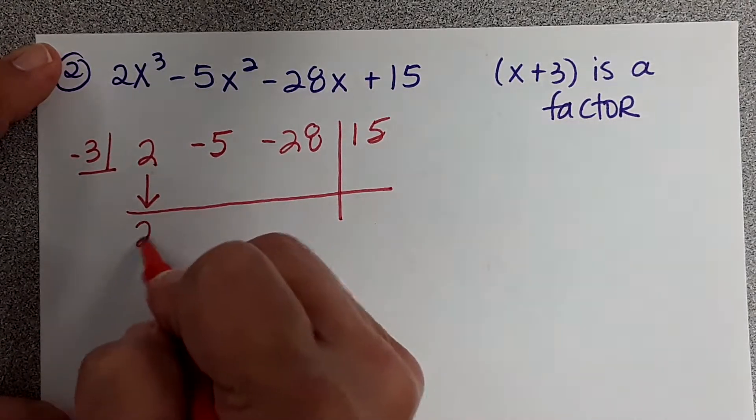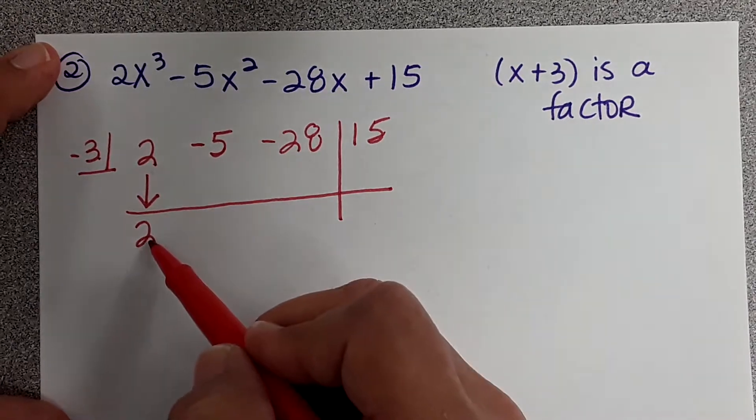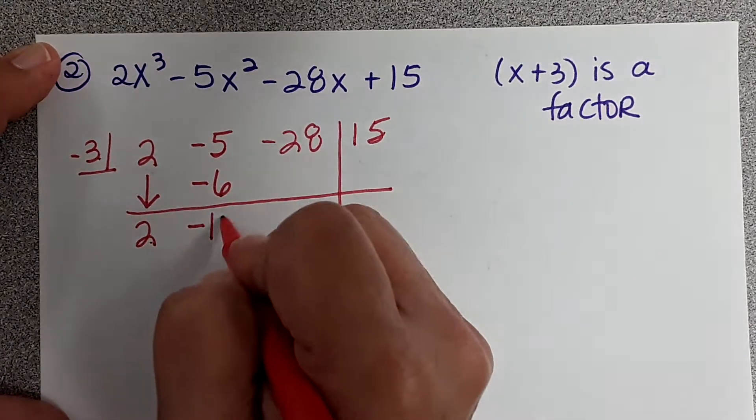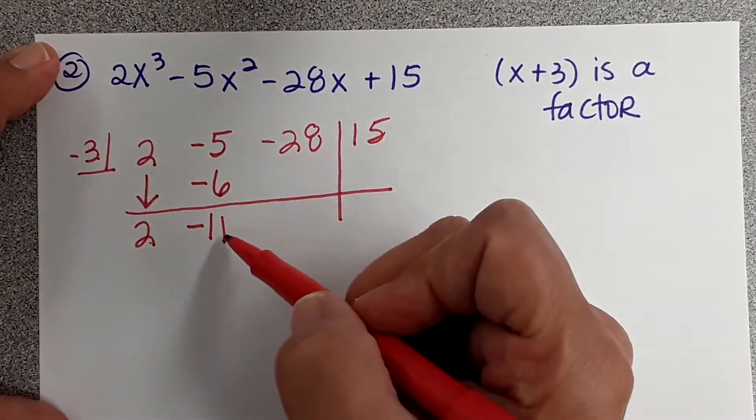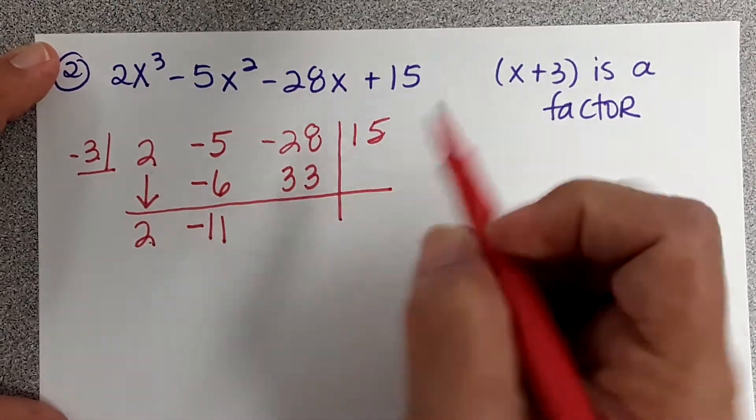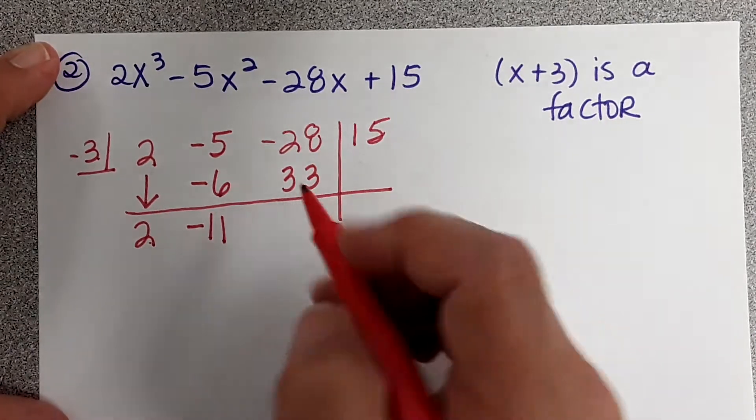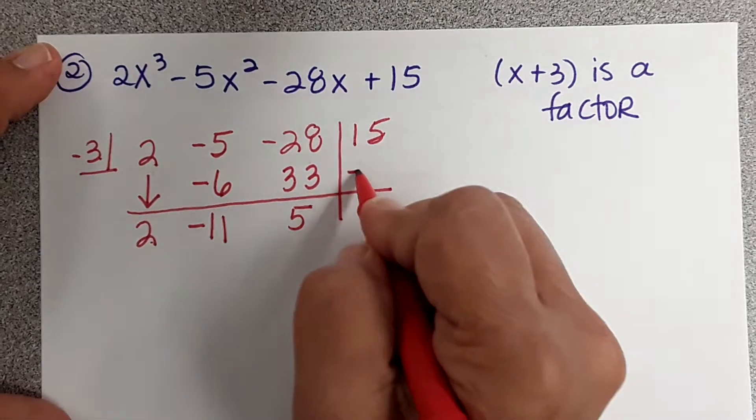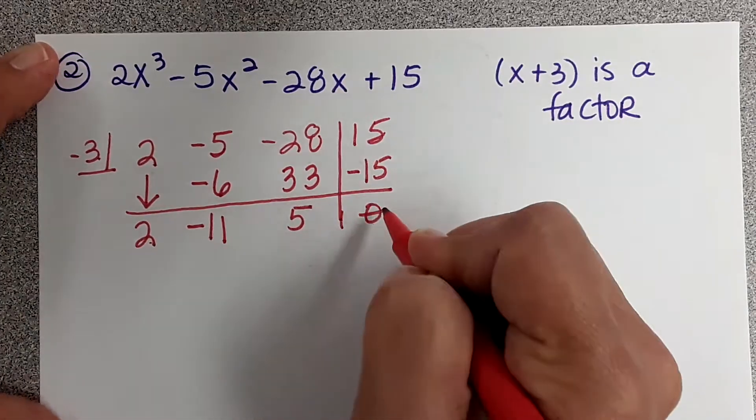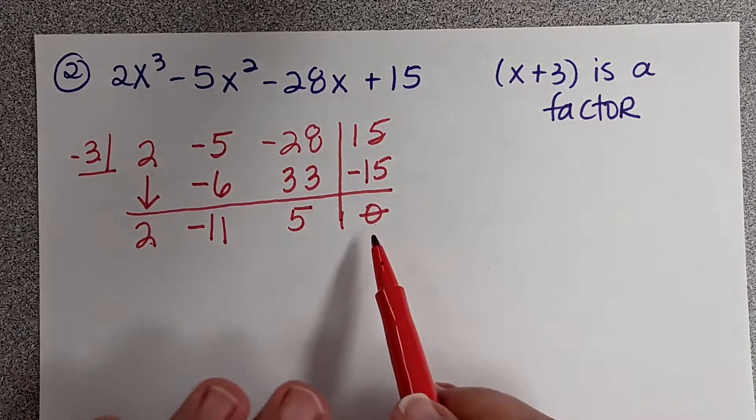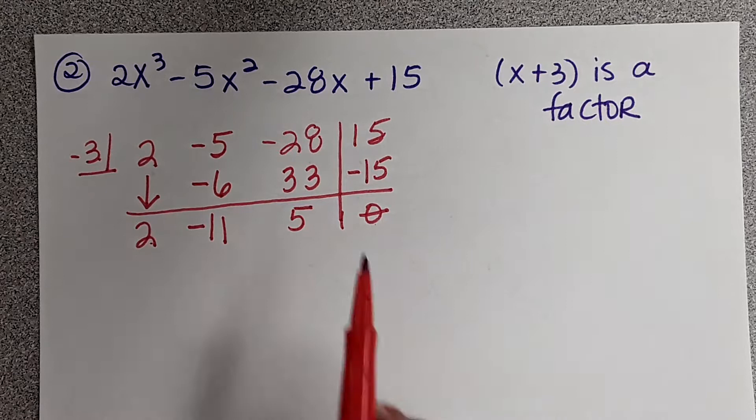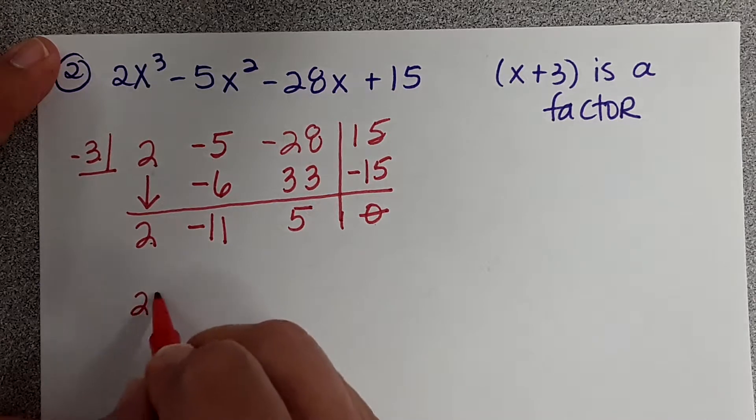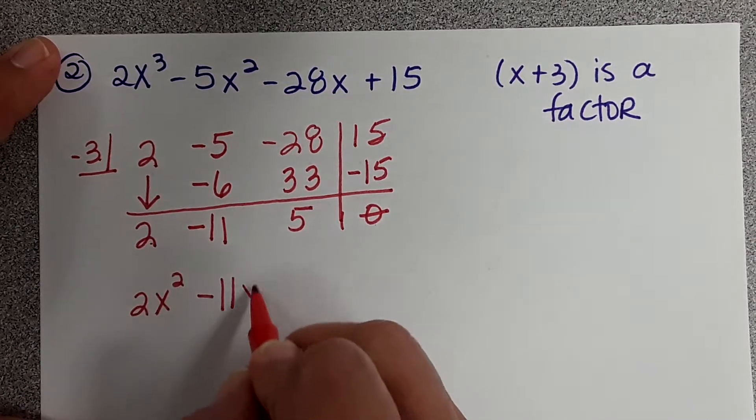Now I'm going to bring down the 2. Negative 3 times 2 is negative 6. Negative 5 and negative 6 is negative 11. Negative 3 times negative 11 is positive 33. Negative 28 plus 33 is 5. Negative 3 times 5 is negative 15, and I get a 0. So that's perfect, right? If it's a factor, that should have been a remainder of 0. Now what does this become? 2x squared minus 11x plus 5.